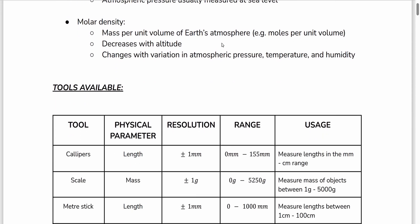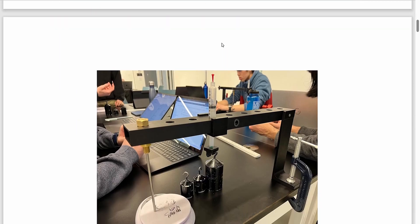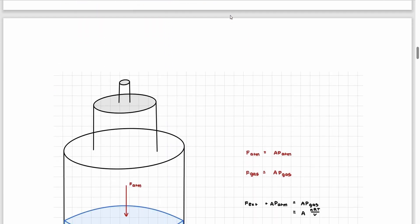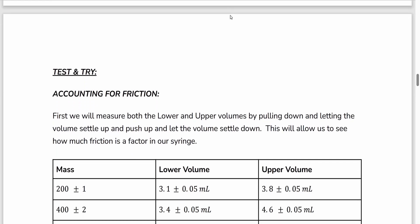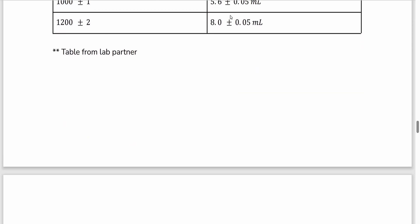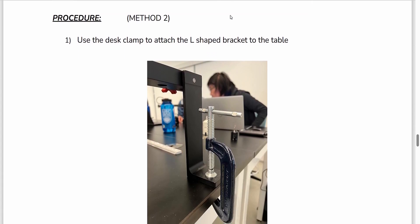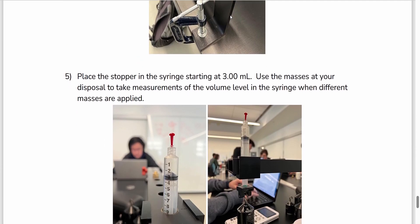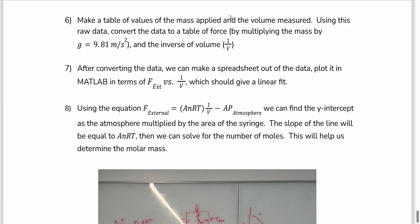In the last experiment lab of Physics 159, we were tasked with measuring the pressure and molar density of the air in the room using some length measurement tools, a scale, a syringe, some masses, a fulcrum, and a desk clamp. This was probably the most difficult lab of all, and it really showed when the pressure and molar density we calculated was two times more than what it actually was. By hanging the masses off the syringe, measuring the volume difference, and applying it to a formula that somehow related everything — and with a little bit of hopes and dreams — we were somewhat able to calculate the air pressure and the molar density of the air.